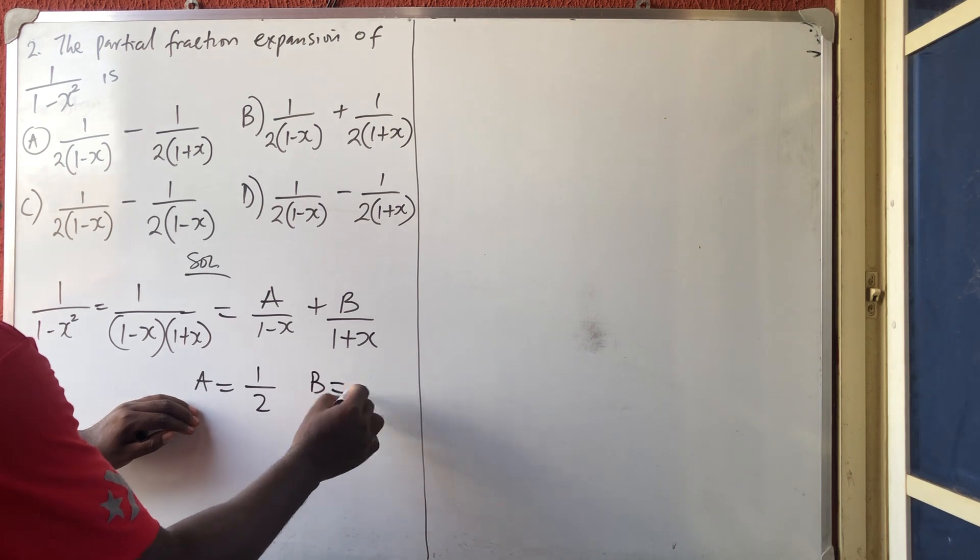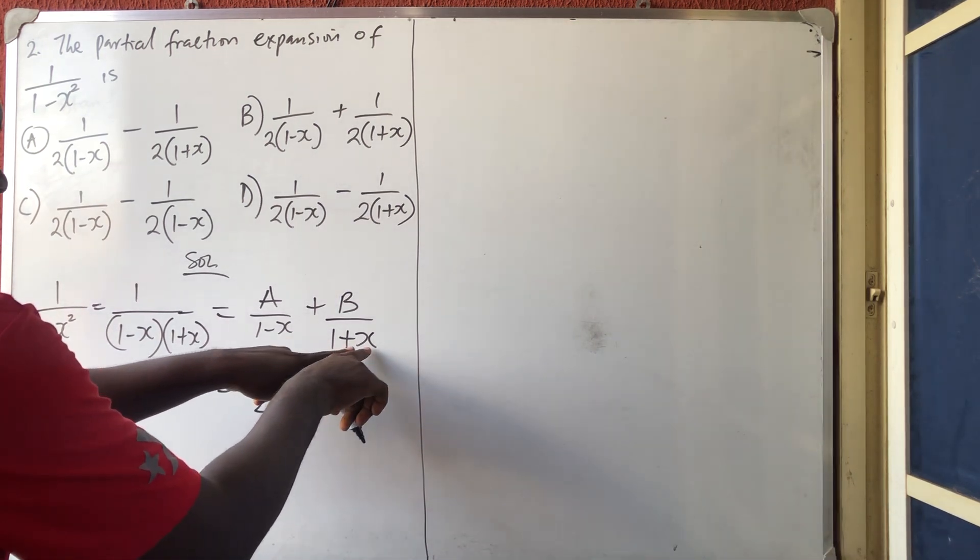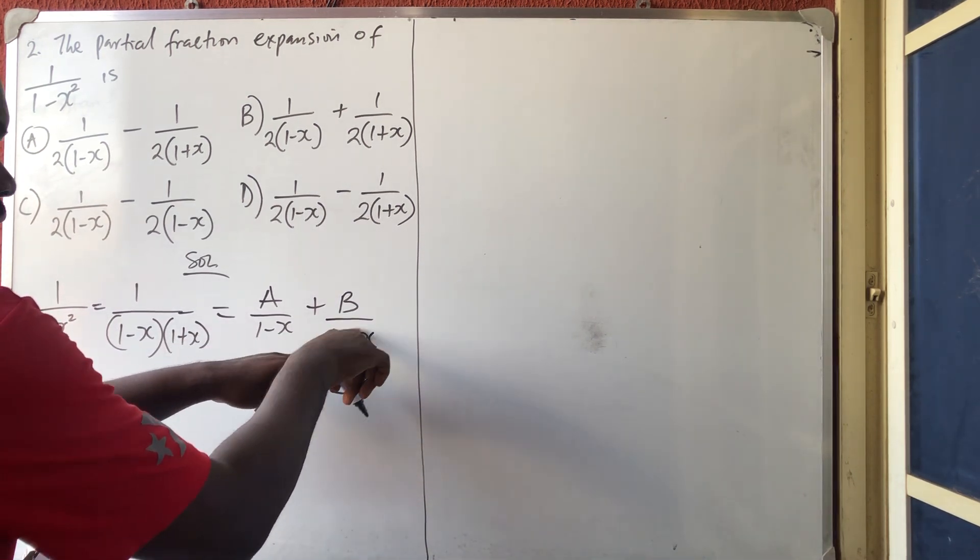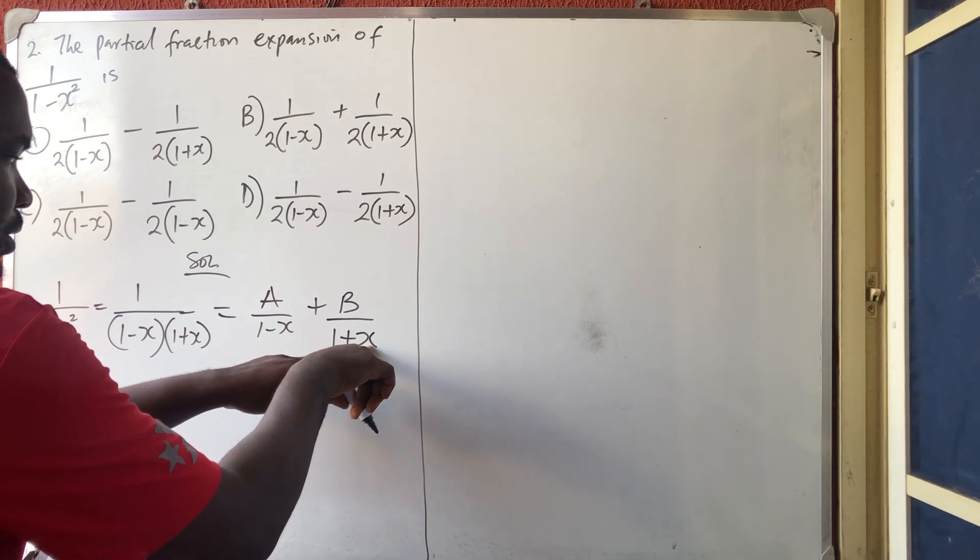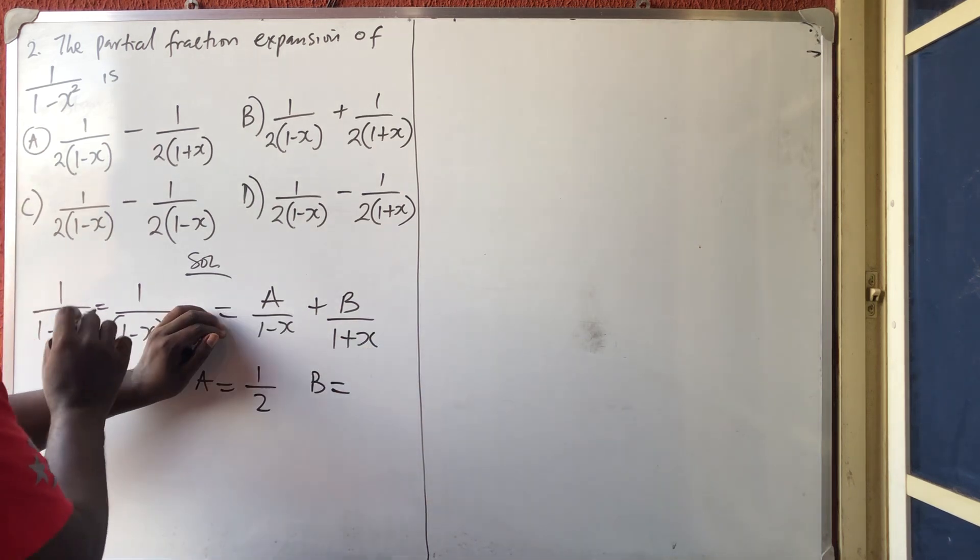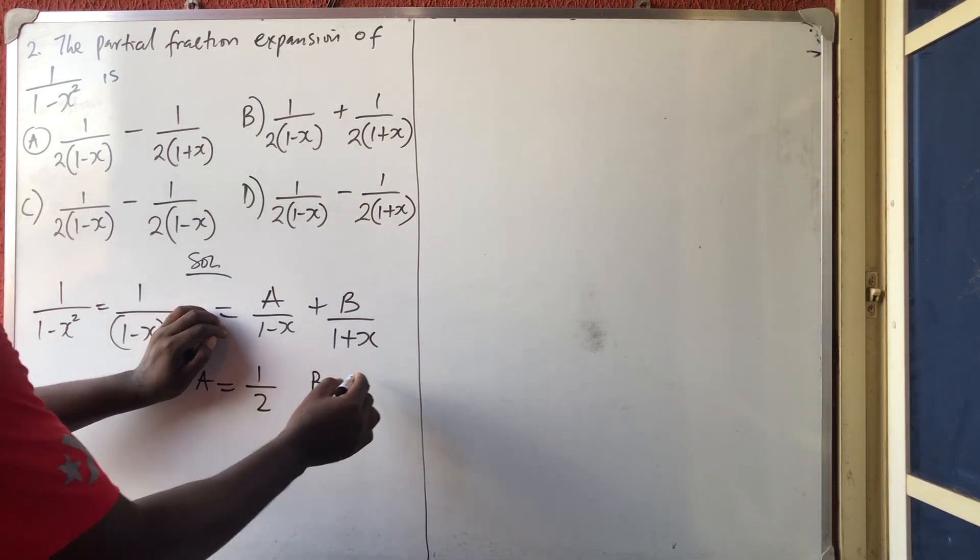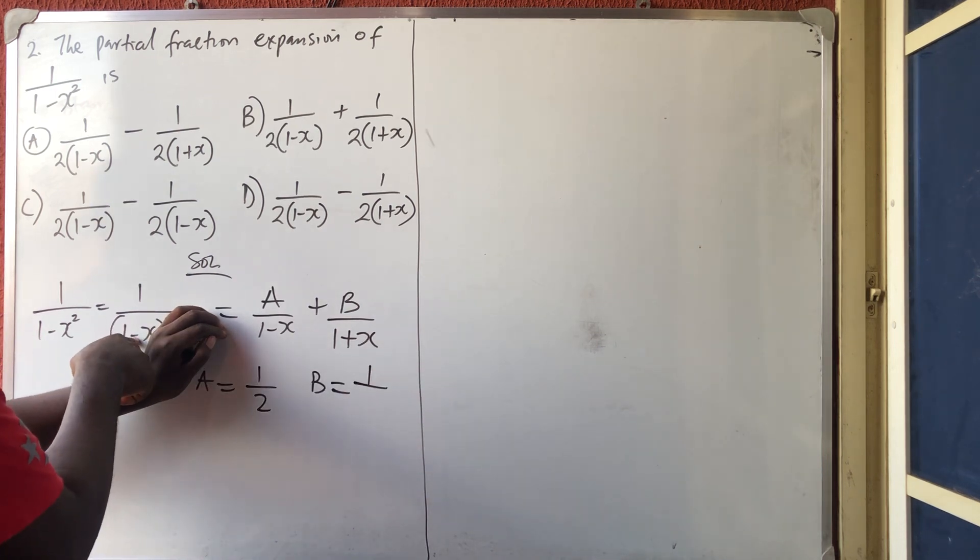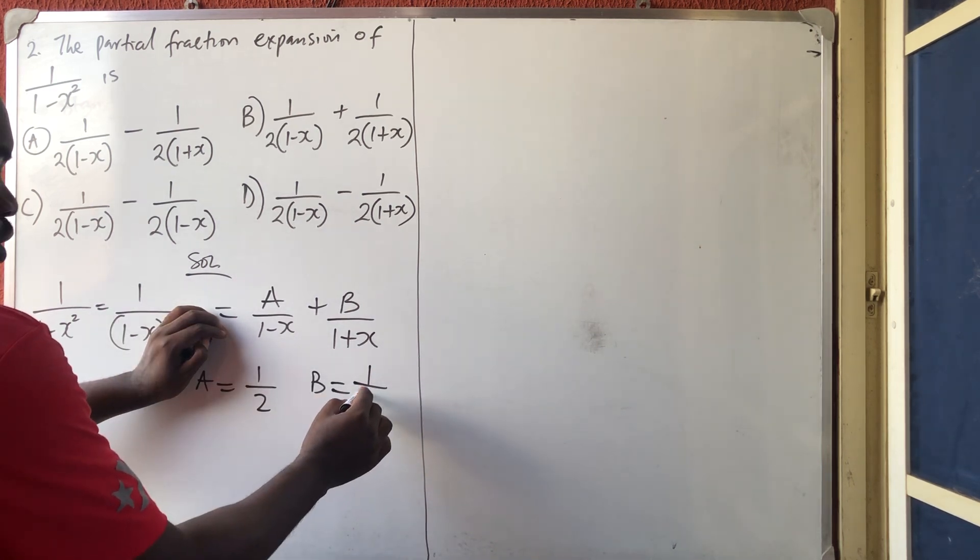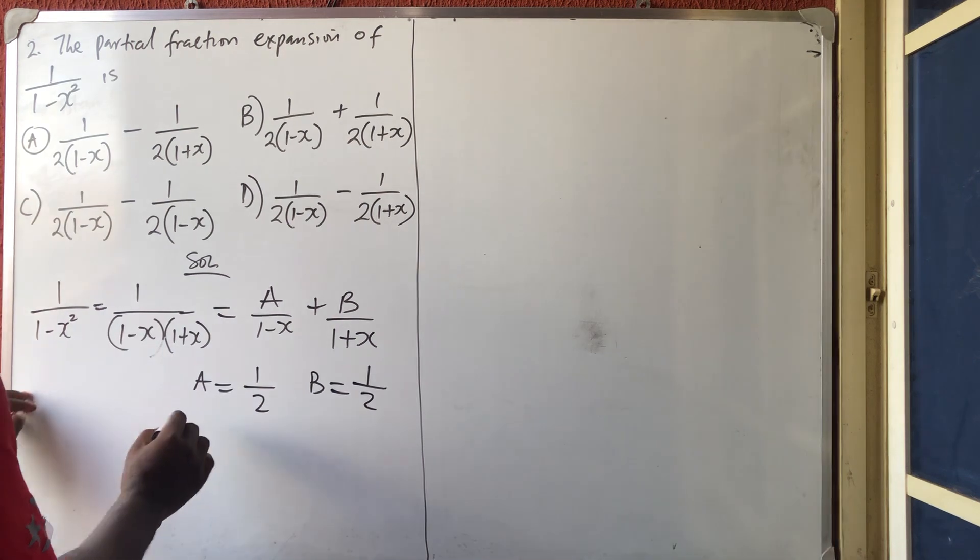Then to get your b, the same thing. What am I going to put as x to make it 0? It's minus 1 because 1 minus 1 is 0. So you close this side and then put that minus 1. So I'm having 1 over 1 minus times minus 1, which is to give you 1 over 2. So I've got my a and b.